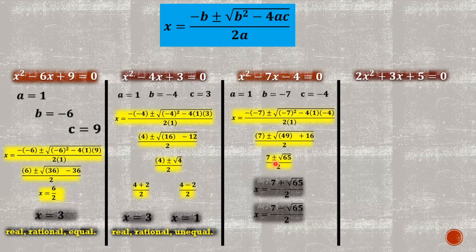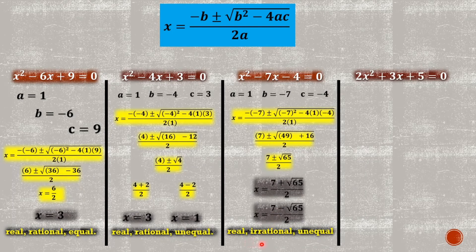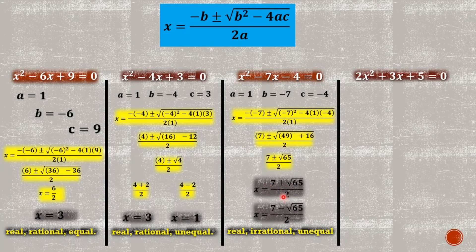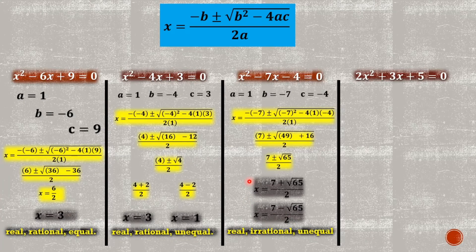We now have two roots: X equals seven plus square root of sixty-five over two, and X equals seven minus square root of sixty-five over two. Since sixty-five has no exact rational square root, these roots are real and irrational. They are also unequal because one root uses plus and the other uses minus. Based on the discriminant, real, irrational, and unequal are proven by these roots.